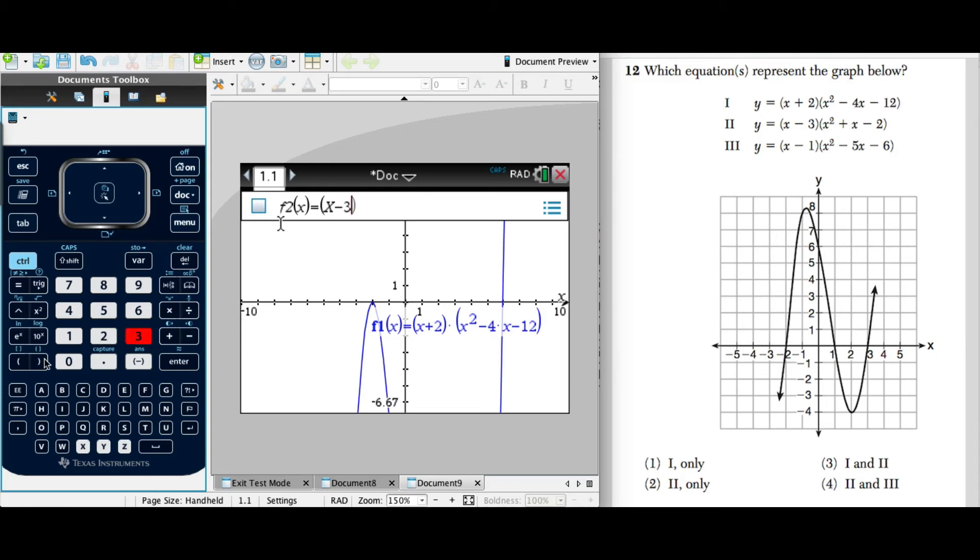Close the parentheses. Set up a new set of parentheses. X squared plus X minus 2. And close those parentheses. Hit our enter key.